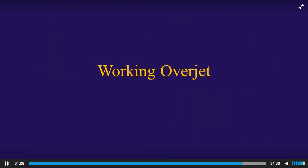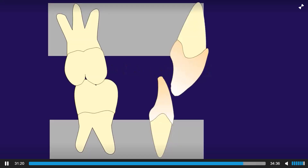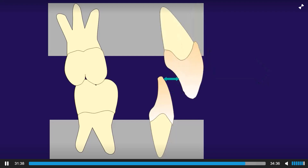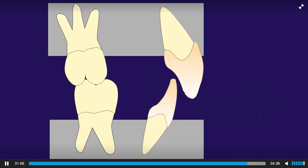Let's talk more about working overjet, because we use this concept no matter what type of orthodontic treatment we are doing. In the last case, the retruded upper anterior teeth were actually touching the lower incisors — the lower incisors had no path to move. So what are we going to do? We're going to regain ideal arch form on the upper by moving those teeth forward. Once we do that, we've created working overjet. Now with that working overjet, the lower anterior teeth actually have a path to move — so we move those retruded lower anterior teeth forward and alleviate the crowding. Working overjet is so important.